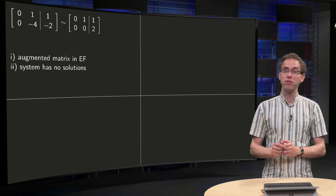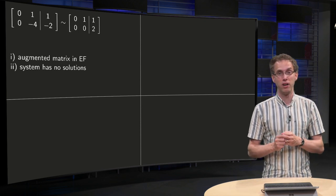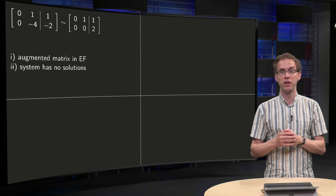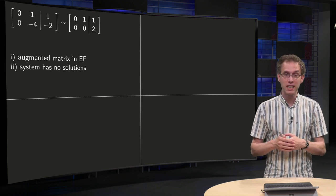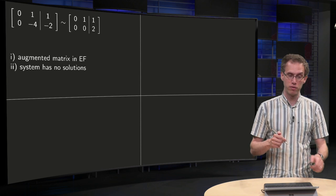Oh, be careful, you first have to row reduce your augmented matrix to echelon form, because only then you can see what the number of solutions is. So if you add four times the first row to the second one,